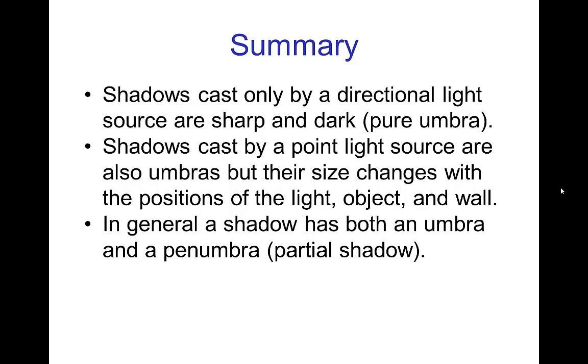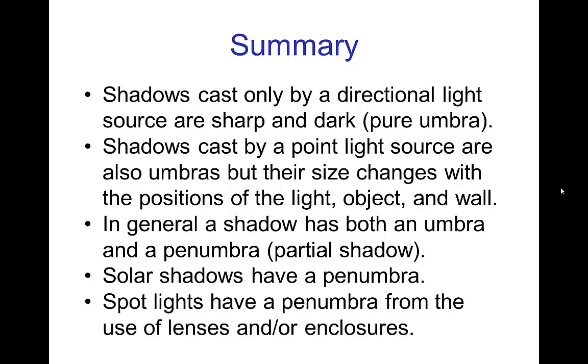The more general types of light sources have both an umbra and a penumbra. The penumbra is where the object casting the shadow only partially blocks the light. Solar shadows have a penumbra as we saw in those photos. And then finally, spotlights have a penumbra that comes from the light source itself, so from the use of lenses and enclosures such as the barn doors. The light itself has a penumbra and in computer graphics that's something that is adjustable to get the desired effects.